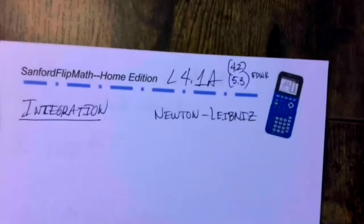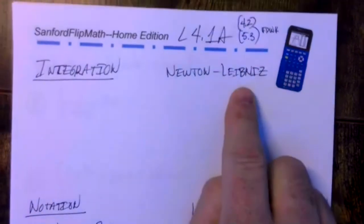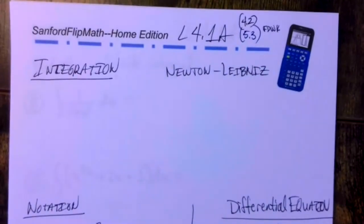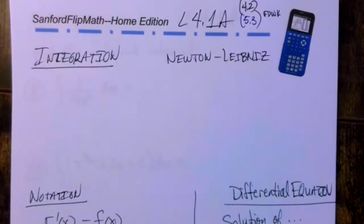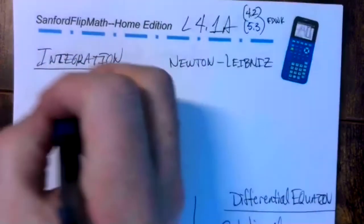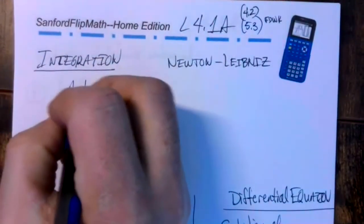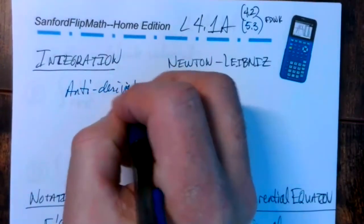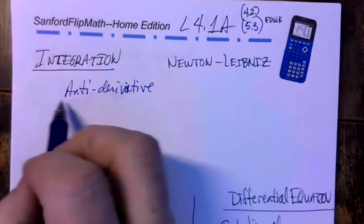You can look up more information about Newton and Leibniz as you wish. Leibniz is spelled L-E-I-B-N-I-Z, easy enough to Google. Integration gets used to find areas and volumes mostly. And basically what it comes down to is anti-derivative — undoing the derivative.